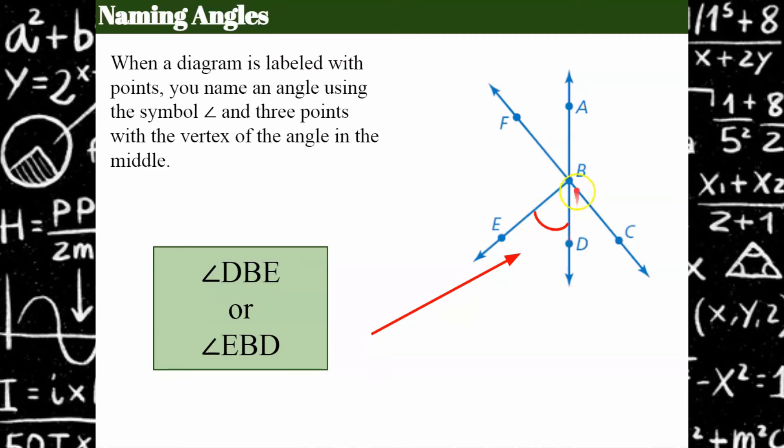So I have D, B, E, and think of it, if you take your pencil, I'm using my pointer, but if you take your pencil and you trace, you start, go to B, then go to E, you've actually drawn the angle. So make sure if you're naming it and you're questioning it that you can do that.